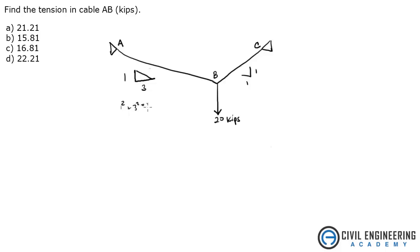1 squared plus 3 squared equals the hypotenuse squared. And so that's 9 plus 1, that's square root of 10, and this is square root of 2. So that's pretty easy.